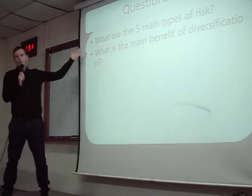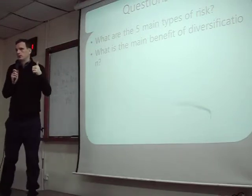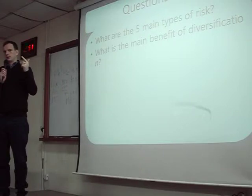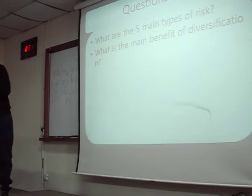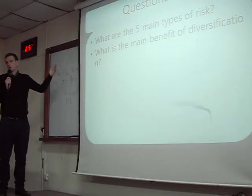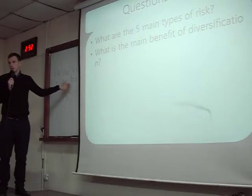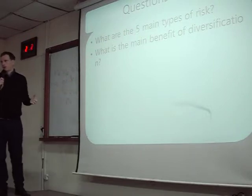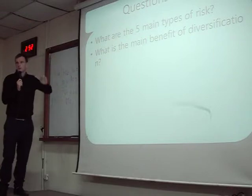Who can tell me the five main types of risk? Project risk, competition risk, sector risk, country risk, market risk. What is the main benefit of diversification? Reduce risk — reducing our loss. We might also reduce our gain, but psychologically, people are more interested in reducing their losses. People don't want to risk a big loss. So people are more afraid of losing money than missing a gain, which is why they like diversification.